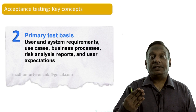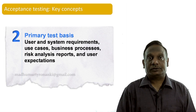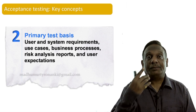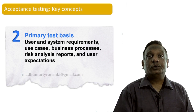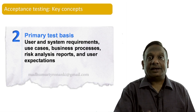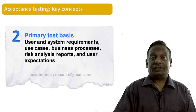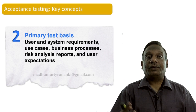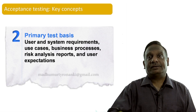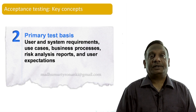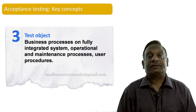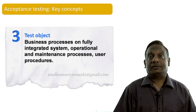Let us talk about what information we use to conduct acceptance tests. Similar to system level testing, we use user and system requirements, use cases, business processes, risk analysis reports, and the expectations of the user. All of these can be used to design, analyze, and conduct acceptance tests.